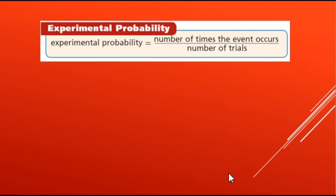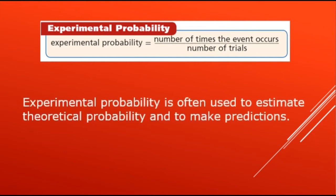For our formula, experimental probability = number of times the event occurs over number of trials. Experimental probability is often used to estimate theoretical probability and to make predictions.